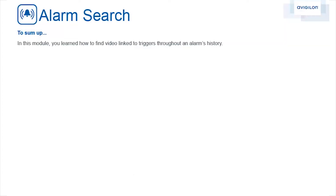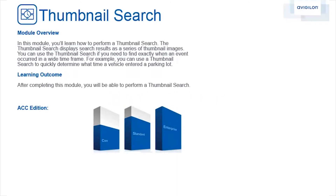To sum up, in this module you'll learn how to find video linked to triggers throughout an alarm's history. In this module, you'll learn how to perform a thumbnail search. The thumbnail search displays search results as a series of thumbnail images. You can use the thumbnail search if you need to find exactly when an event occurred in a wide time frame. For example, you can use a thumbnail search to quickly determine what time a vehicle entered a parking lot. After completing this module, you will be able to perform a thumbnail search. This feature is available in these editions of ACC software.